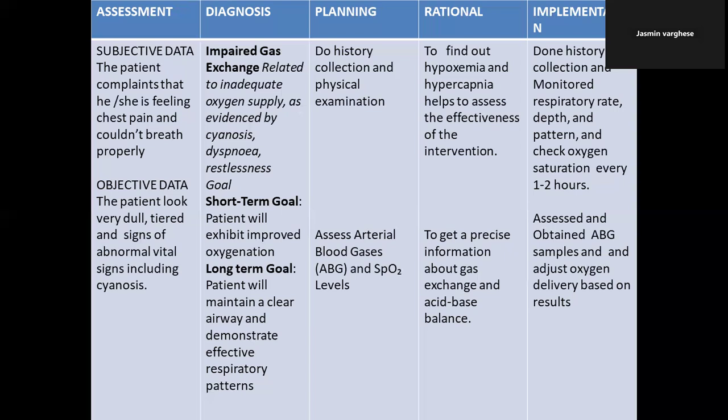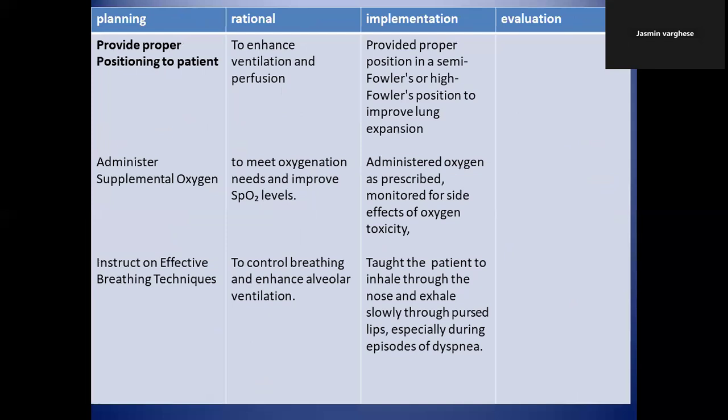Next, assess arterial blood gas (ABG) and SpO2 — oxygen saturation levels — to get precise information about gas exchange and acid-base balance, since the patient is having breathing difficulty. In implementation, assist in obtaining ABG levels and adjust oxygen delivery based on the results.